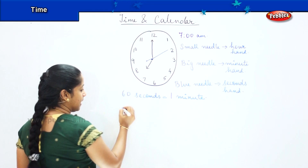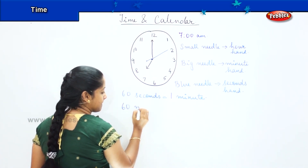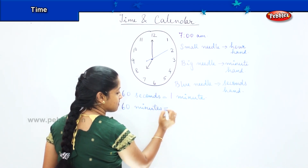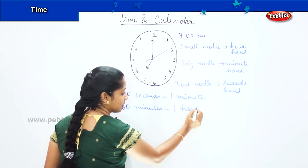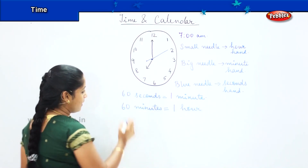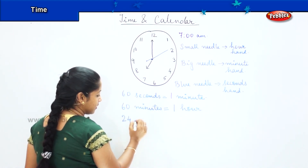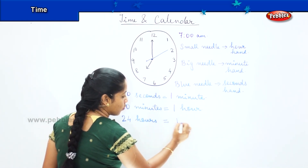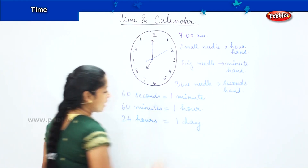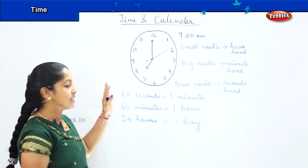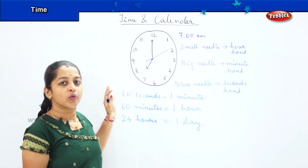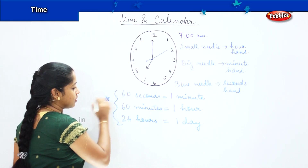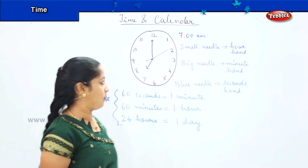So 60 seconds makes one minute. Then 60 minutes makes one hour. And 24 hours makes one day. In this chapter, children, this is the most important thing you need to understand before solving problems — this is very crucial.